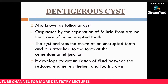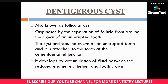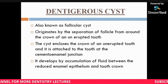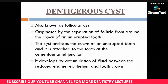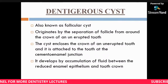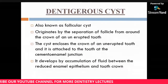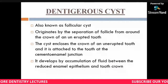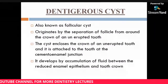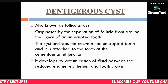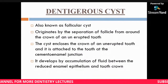The dentigerous cyst — also known as the follicular cyst — originates from separation of the follicle from around the crown of an unerupted tooth. The cyst encloses the crown of the unerupted tooth and is attached to the tooth at the cemento-enamel junction (CEJ). It develops by accumulation of fluid between the reduced enamel epithelium and the tooth crown. This is an important exam and OSCE point.